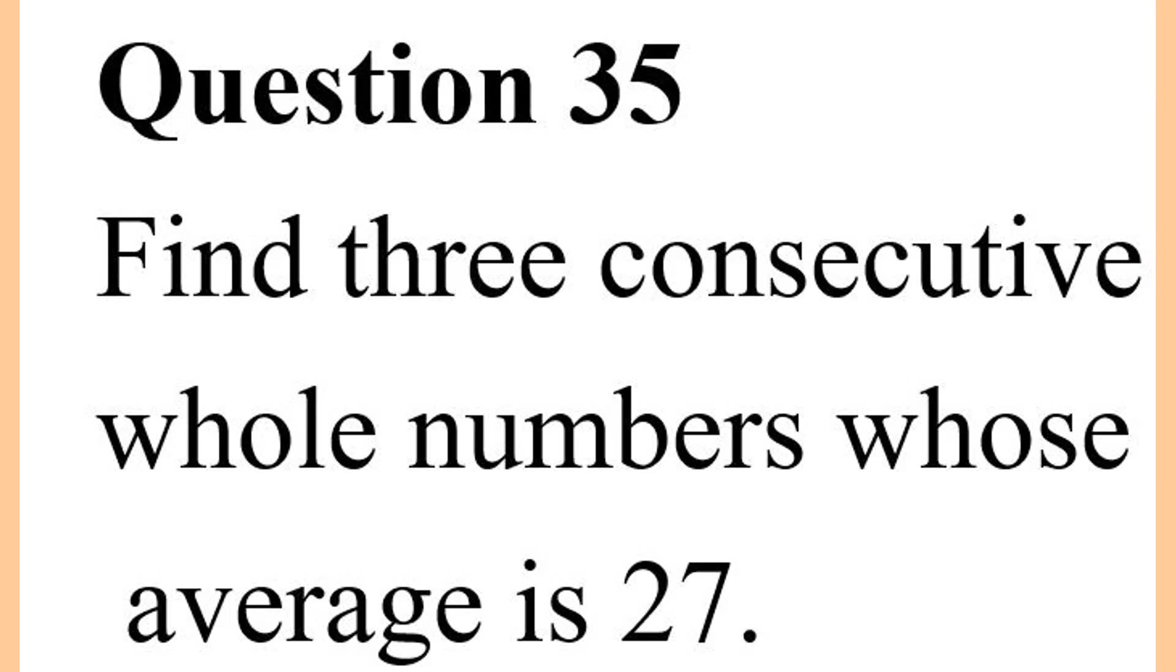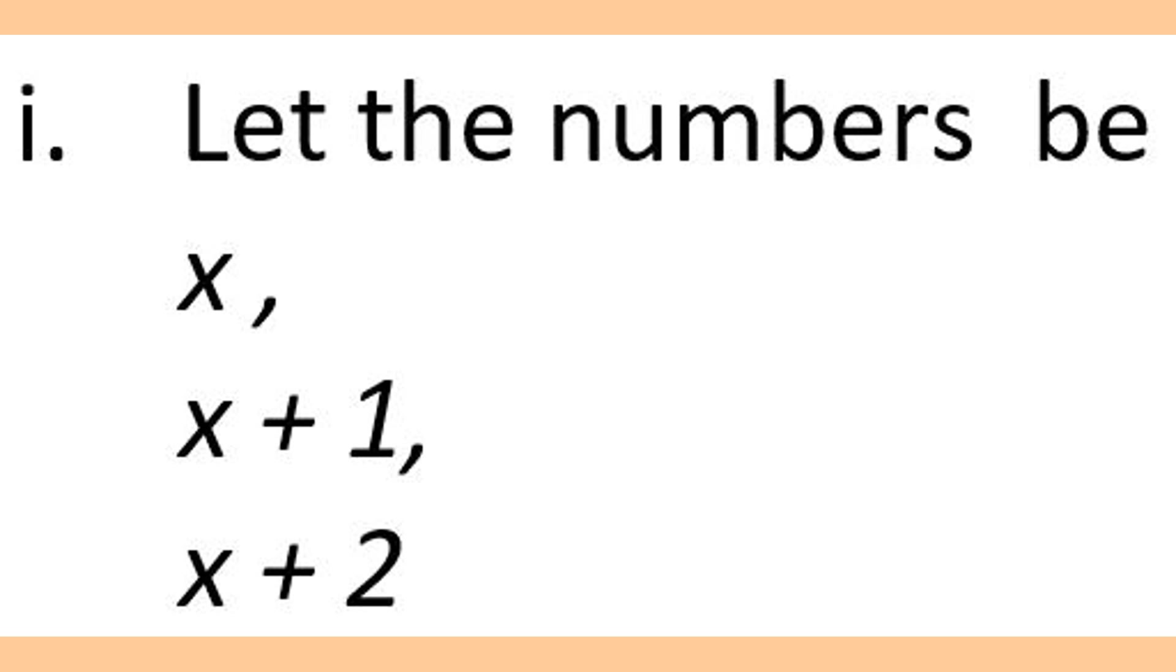Find three consecutive whole numbers whose array is 27. To find these three consecutive numbers whose array is 27, let the first number be x, the second consecutive number be x plus 1, and the third one be x plus 2.